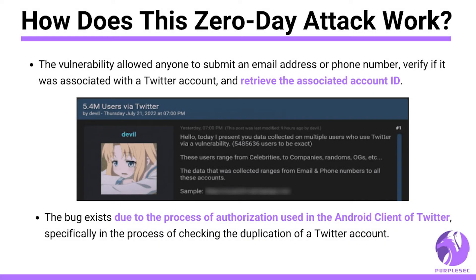So how did this zero-day attack gain access to the personal information of 5.4 million Twitter users? The vulnerability allowed anyone to submit an email address or phone number, verify it if it was associated with a Twitter account, and retrieve the associated account ID. The security researcher Zirinovsky reported on HackerOne's bug bounty platform that this vulnerability allows any party without any authentication to obtain a Twitter ID — equivalent to getting the username of an account — simply by submitting a phone number or email, even though the user had prohibited this action in the privacy settings.